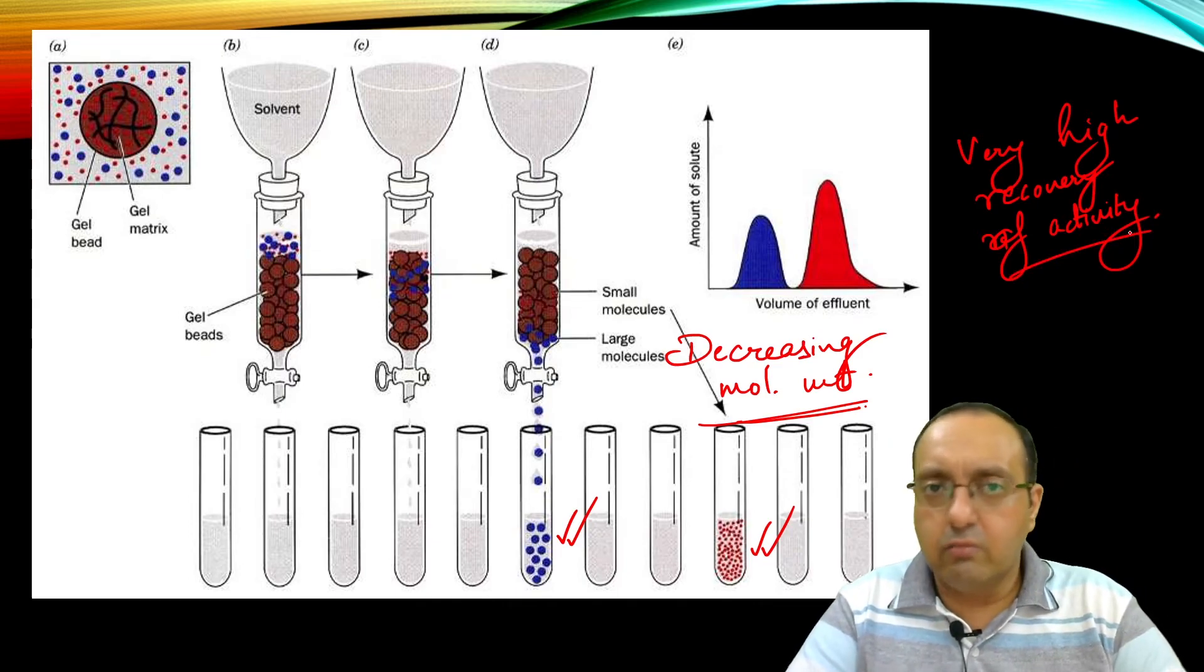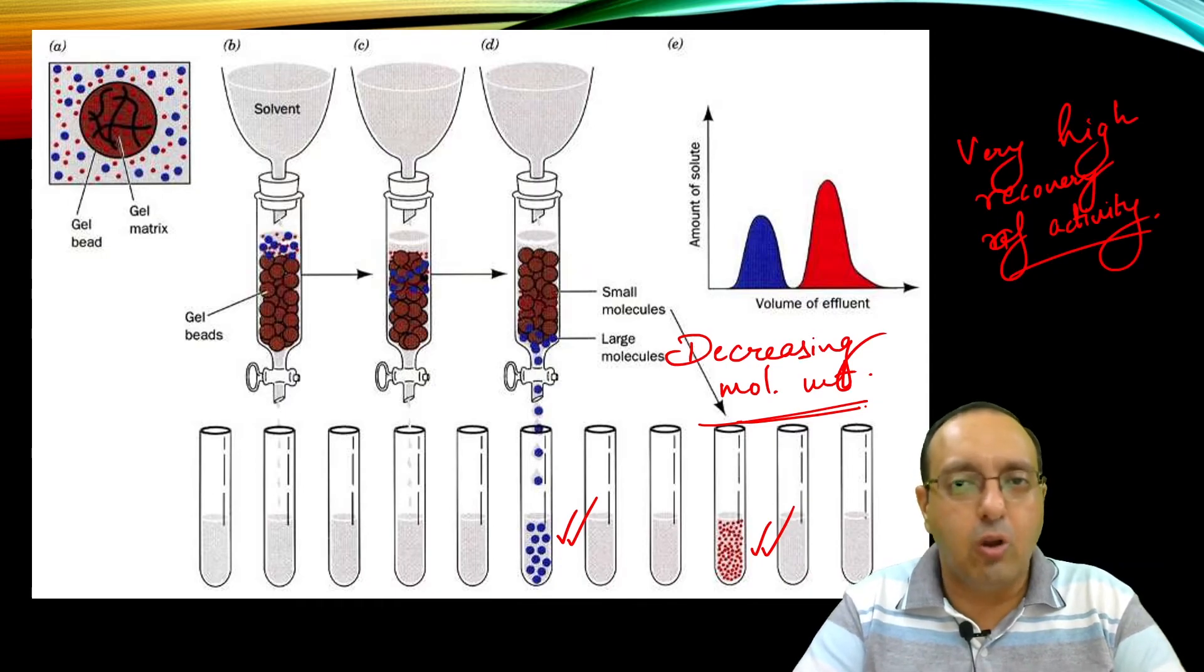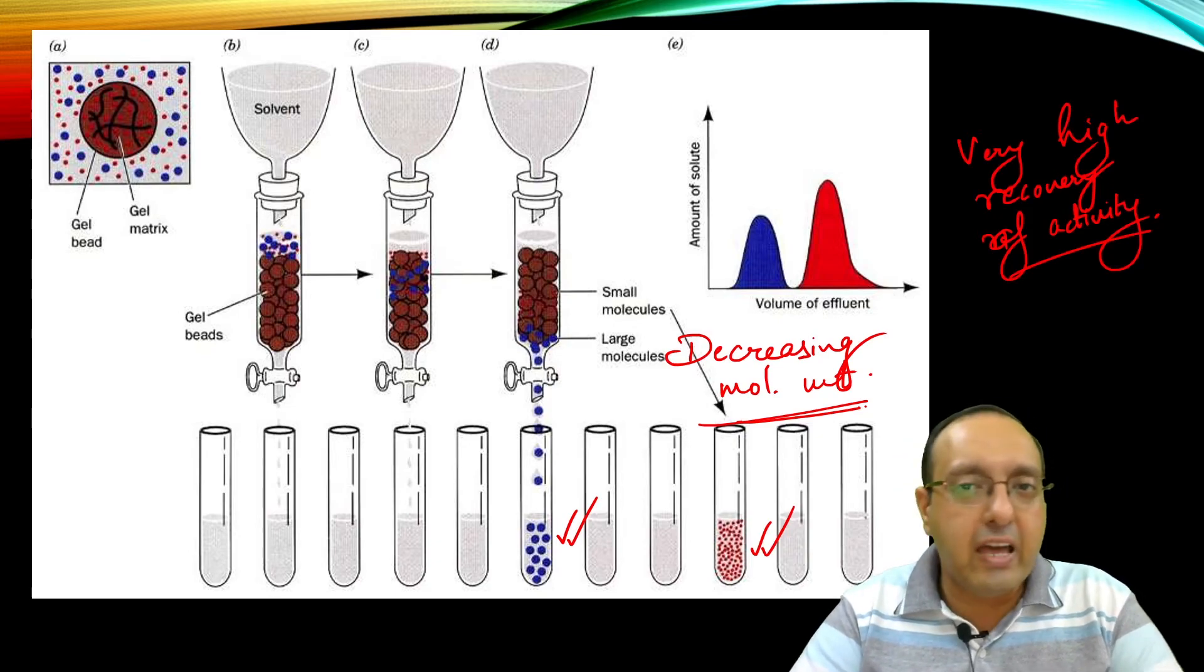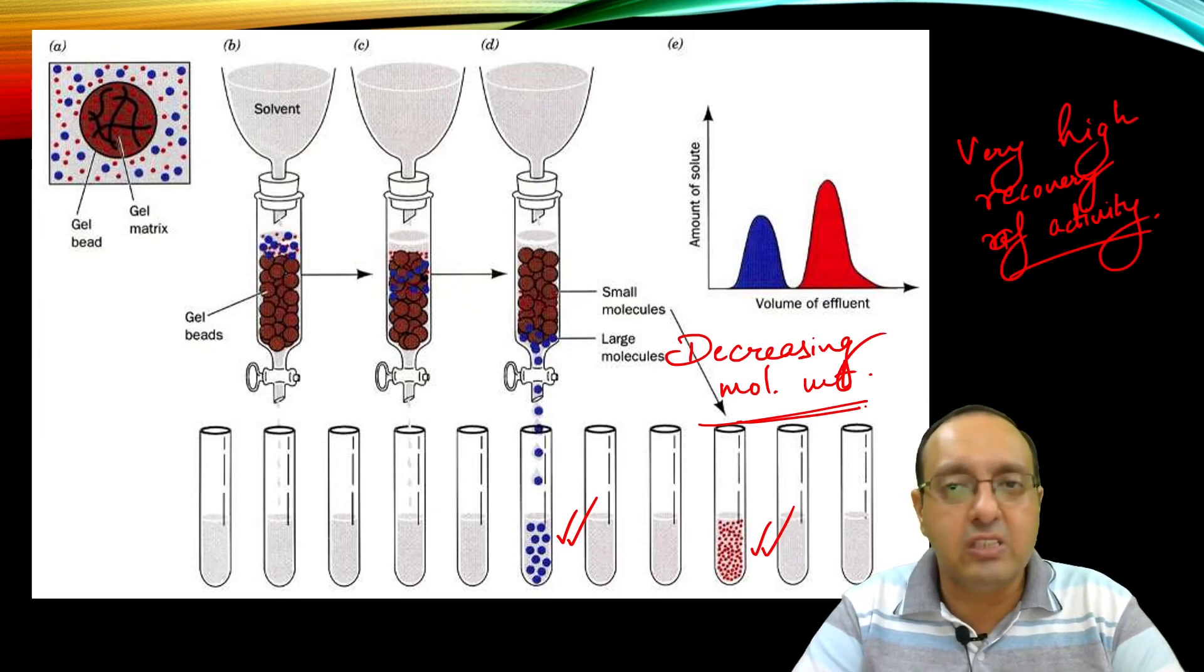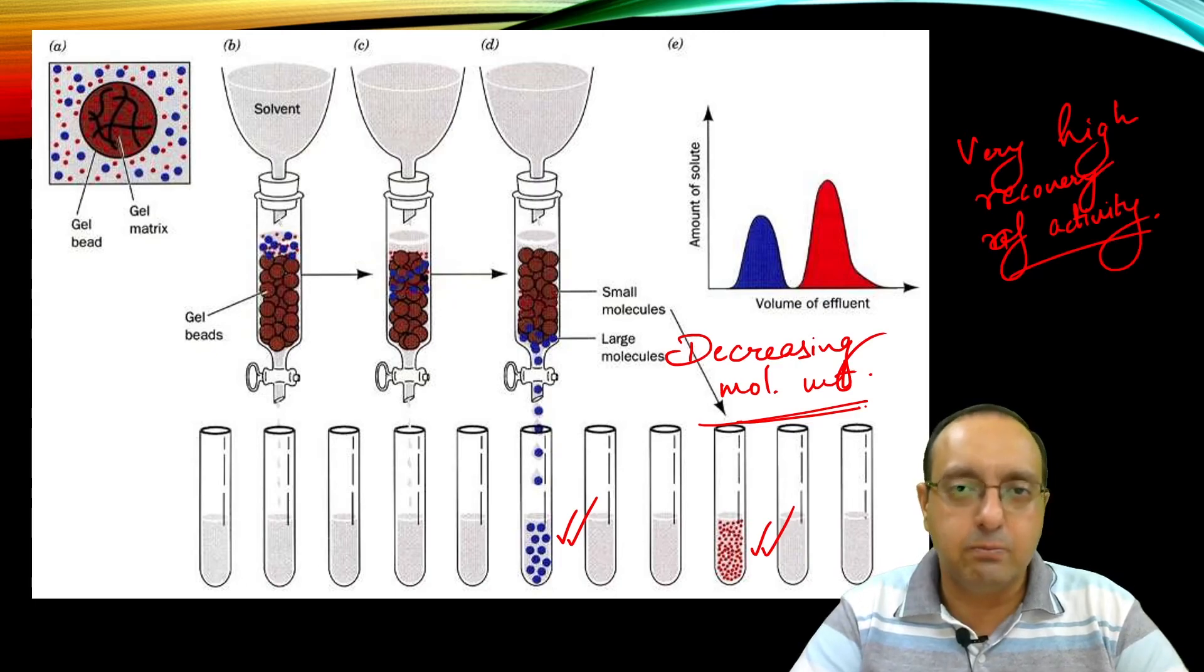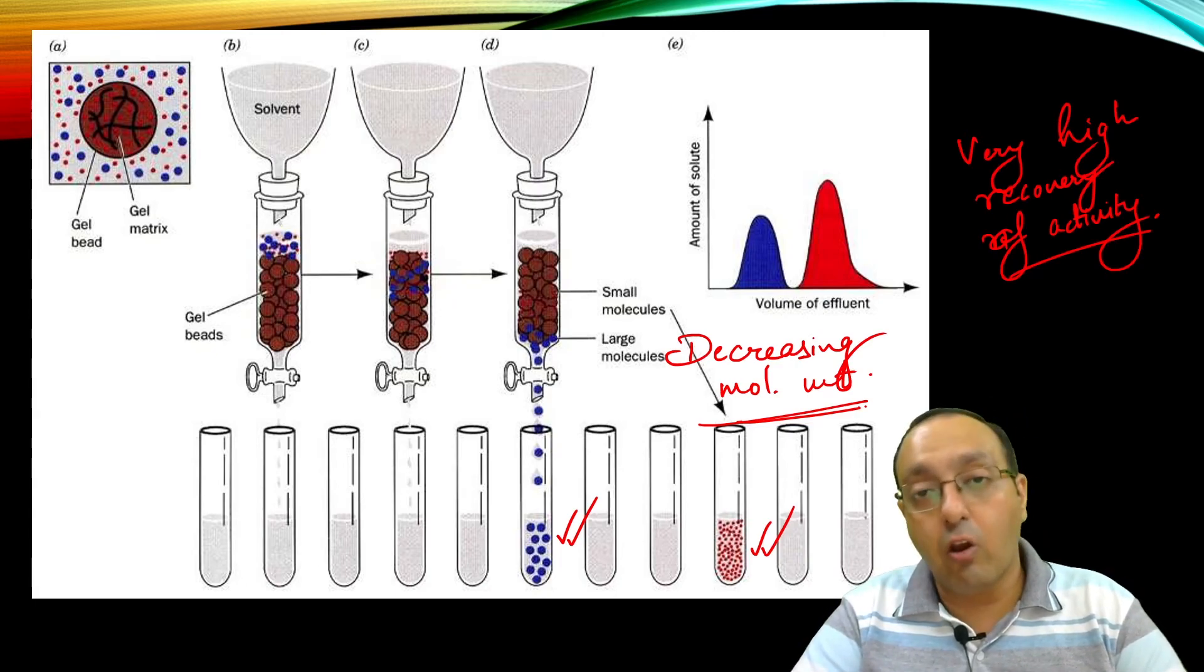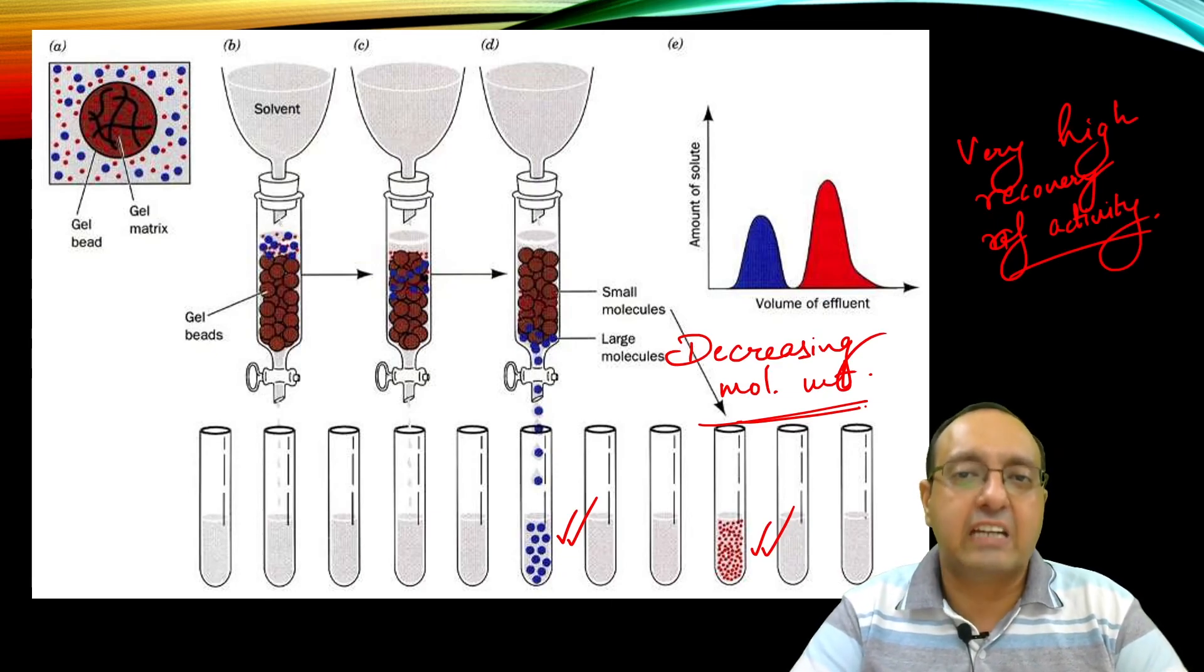Most of the time, we recover almost completely active proteins as much as possible, because proteins, as we should remember, are pretty fragile. Any type of ion exchange chromatography or other types usually have some pH ranges where the protein loses activity, so we expect some loss. But here, because it's purely a filtration step—purely physical in nature—we get a lot of recovery of active proteins.